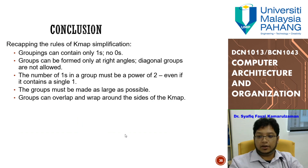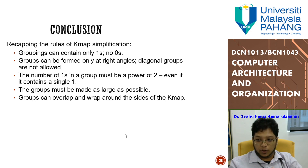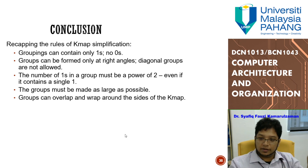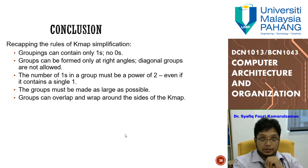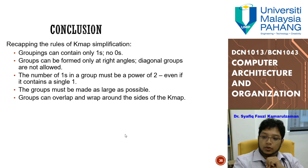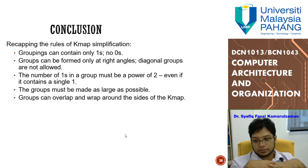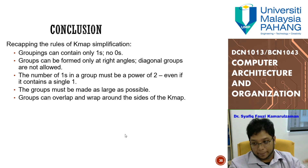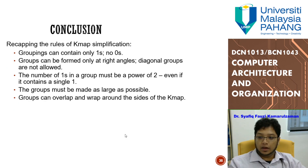To recap the K-map simplification rules: groups must contain only 1s; groupings must be at right angles — vertical or horizontal only, no diagonals; the number of 1s in a group must be a power of two; groups must be made as large as possible; and groups can overlap and wrap around the sides of the K-map. Think of the K-map as a sphere rather than a flat 2D plane.